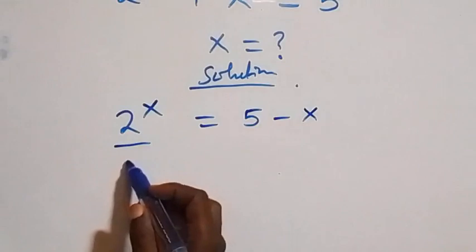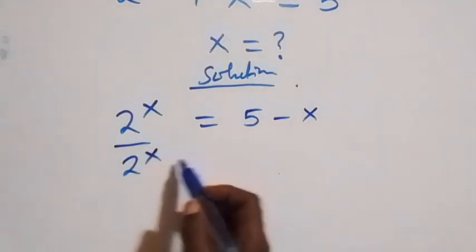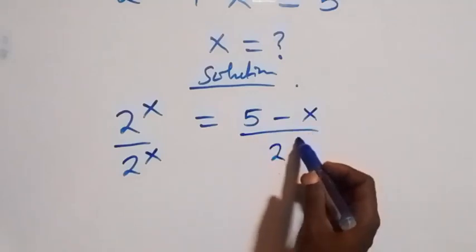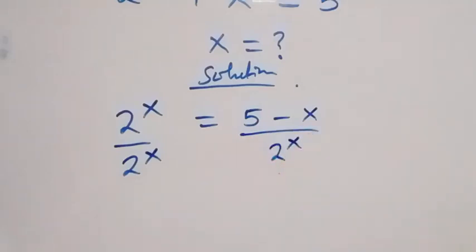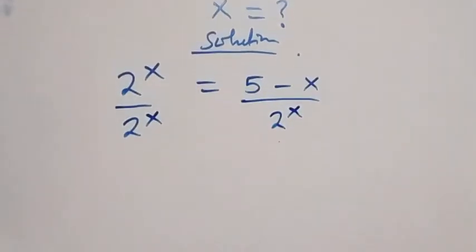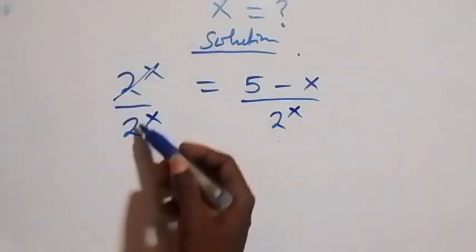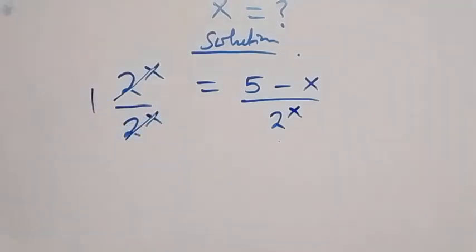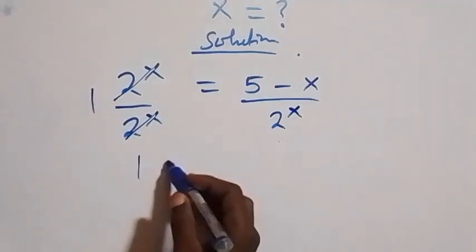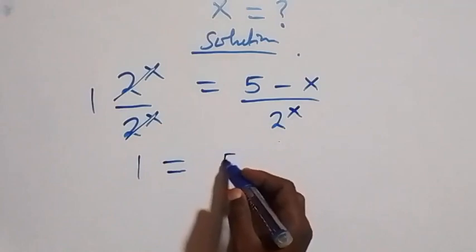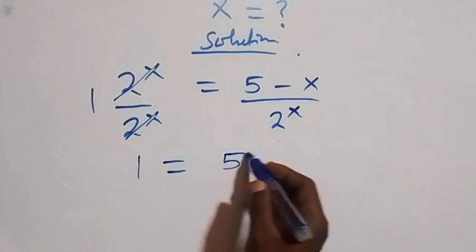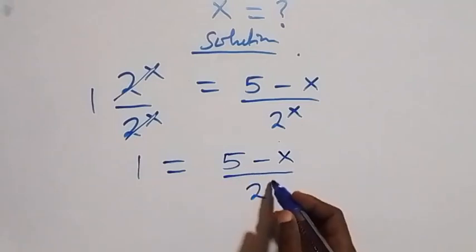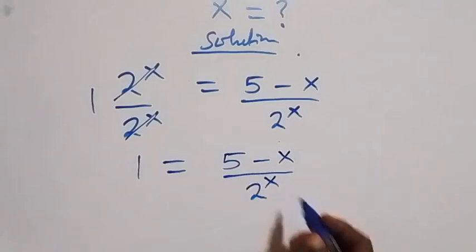So divide this side by 2 raised to power x and also this side by 2 raised to power x. Then it implies 2 raised to power x cancels each other here and we have 1, which means we have 1 equals to 5 minus x over 2 raised to power x.